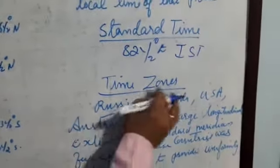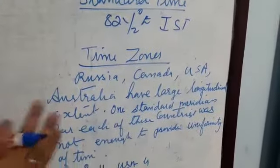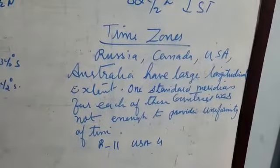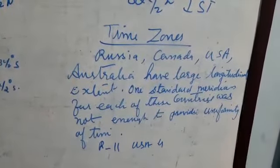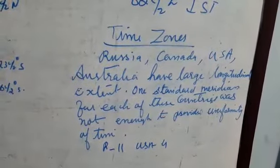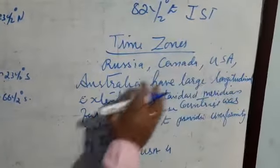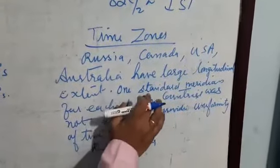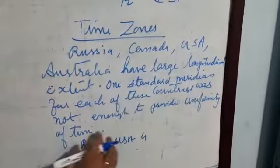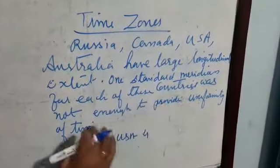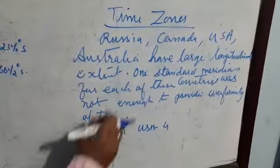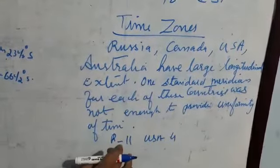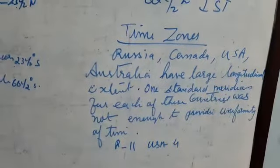The next topic is time zones. Some countries have a large east-west longitudinal extent, so they are divided into time zones. Countries like Russia, Canada, USA, and Australia have a large longitudinal extent. One standard meridian for each of these countries was not enough to provide uniformity of time, so Russia has 11 time zones and the US has 4 time zones.